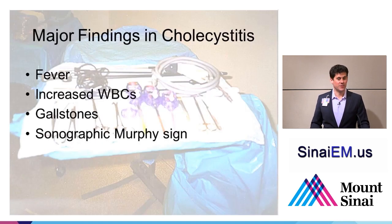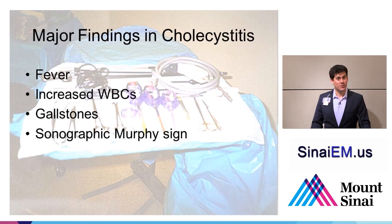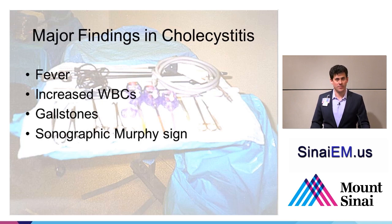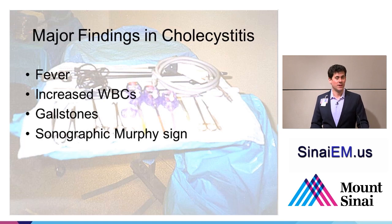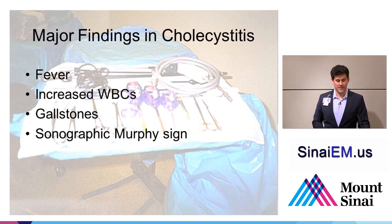Let's look at the major findings in cholecystitis: fever, increased white blood cell count — these are clinical signs — and then gallstones and a sonographic Murphy sign. These are relatively low-hanging fruit; they're reasonably sensitive and specific, especially when you combine all of them. If you can detect whether a patient has a sonographic Murphy sign and whether they have stones, and combine that with your clinical assessment, you can go pretty far towards ruling in or out cholecystitis rapidly at the bedside.